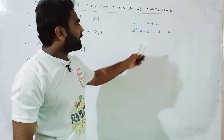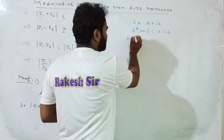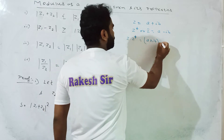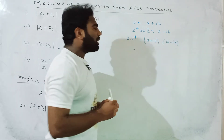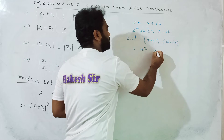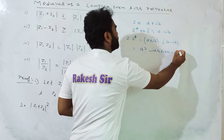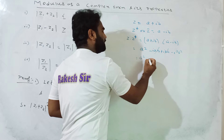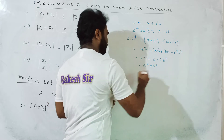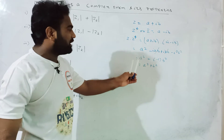The complex conjugate of a minus ib, when multiplied together — z into z-star — gives a squared minus i-squared b squared. Since i-squared equals minus 1, we can write a squared plus b squared. So z into z-star equals a squared plus b squared.